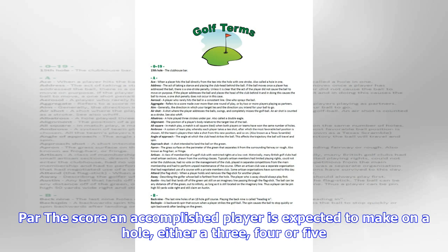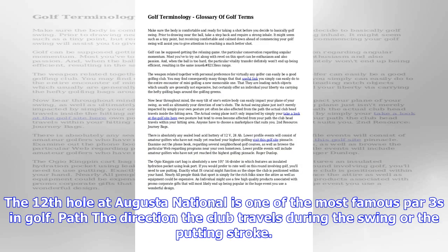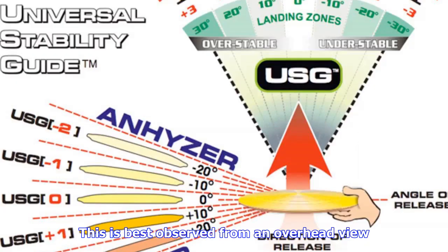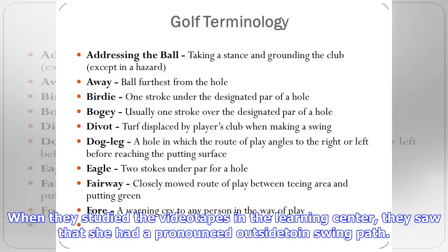Lever system: the skeletal system is composed of numerous bones which, in mechanical terms, act as levers. The two primary levers in the golf swing are: 1) the target arm, comprised of the radius, ulna and humerus, and 2) the club, when the target wrist becomes cocked.